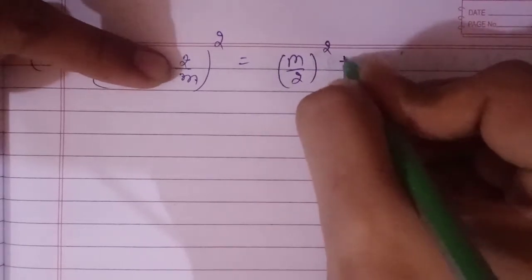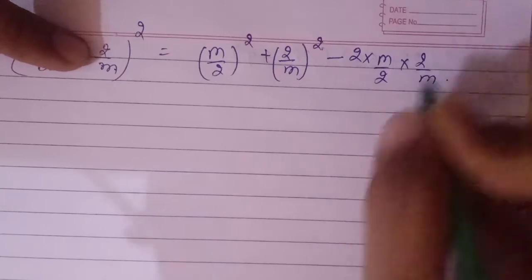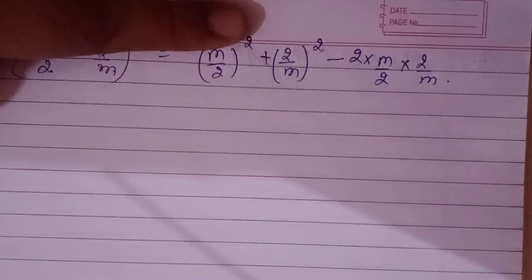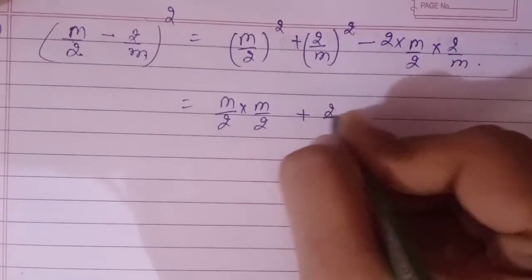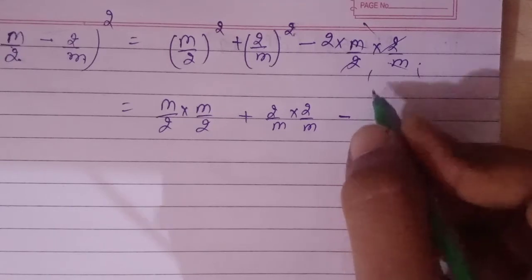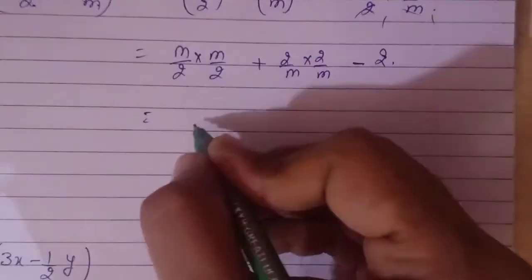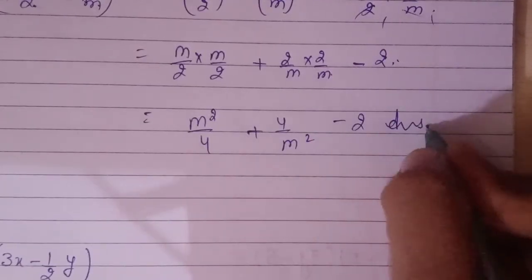Moving to the fifth part: (m/2 - 2/m)². There is a minus sign and we are going to calculate the square using (a-b)² = a² + b² - 2ab. So it will be (m/2)² + (2/m)² - 2×(m/2)×(2/m). That gives m²/4 + 4/m² - 2. This will be the answer.